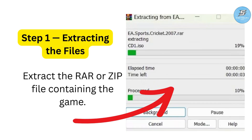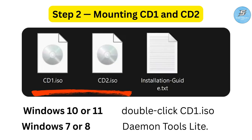If you purchased a digital copy, you will receive these files directly. Make sure you are using legitimate game files — it helps avoid installation errors. Once extraction is done, we can move on to mounting the game disc. After extraction, open the folder and you will see two files: CD1.iso and CD2.iso.